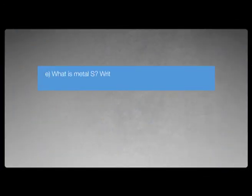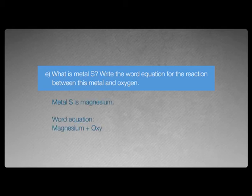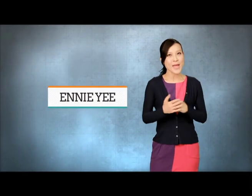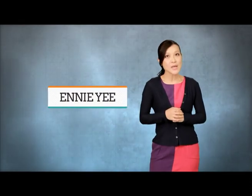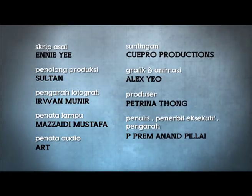Question E: What is metal S? Write the word equation for the reaction between this metal and oxygen. Metal S is magnesium. The word equation is: magnesium reacts with oxygen to produce magnesium oxide. I hope you have found this lesson useful. I'm Amy E, and hope to see you again in the next episode of SPM Top Tutor Science.